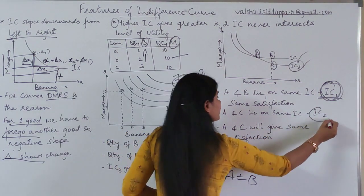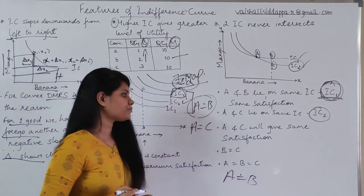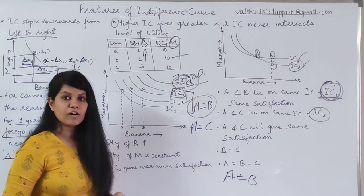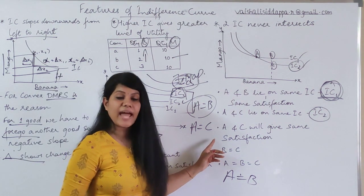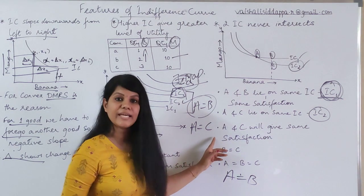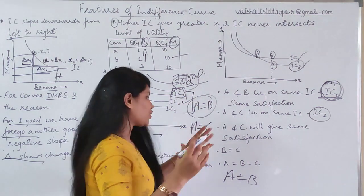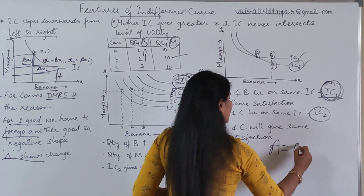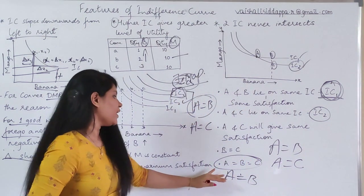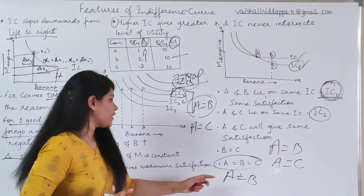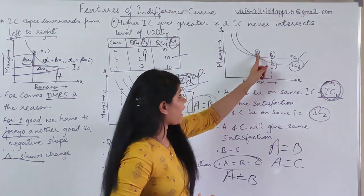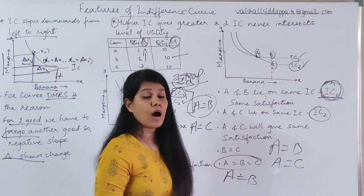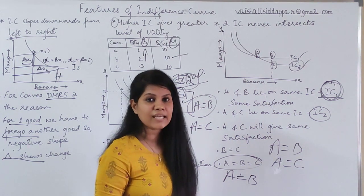Now we come to IC2. On IC2, point A is equal to C now — A and C both lie on the same indifference curve IC2. So we have to conclude: A is equal to C, meaning A gives the same satisfaction as C. If A equals B and A equals C, then it becomes mathematically: A is equal to B, and B is equal to C. So the simple logic behind this is that every point — A, B, C, and all different points — gives the same kind of satisfaction.